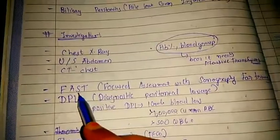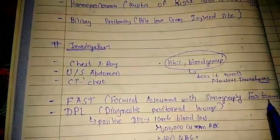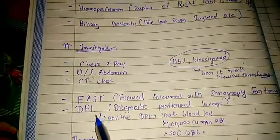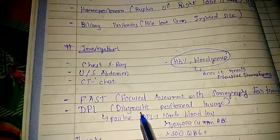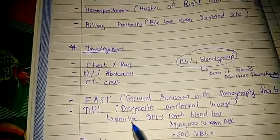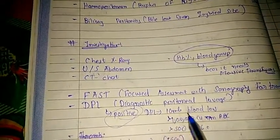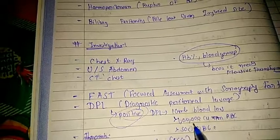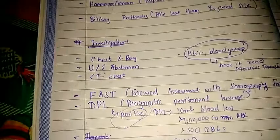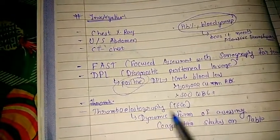Special investigations include FAST — Focused Assessment with Sonography for Trauma — and DPL, meaning Diagnostic Peritoneal Lavage. A positive DPL is defined as greater than 10 mL of blood loss, greater than 100,000 RBC per cubic mm, or greater than 500 WBC per cubic mm.